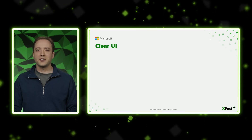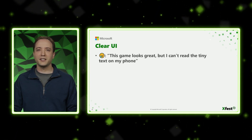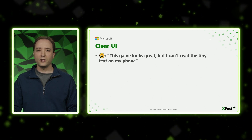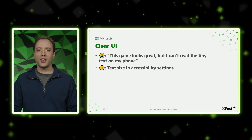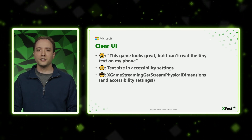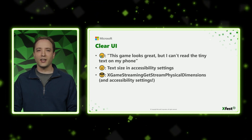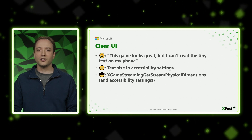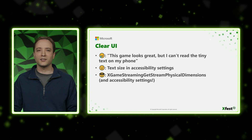One more topic in fidelity is Clear UI. We want to relate a common feedback we get from our users: 'This game looks great, but I can't read the tiny text on my phone.' A good start is to add text size to your game's accessibility settings to improve readability for users on any device, including TVs. And even better, you can call the xGameStreamingGetStreamPhysicalDimensions API, which gets the size of the stream on the user's device. You can use it to set a good default, and then let users change their accessibility settings as needed.